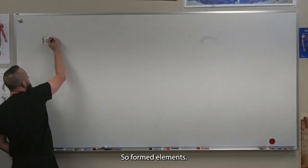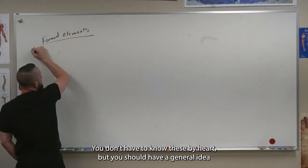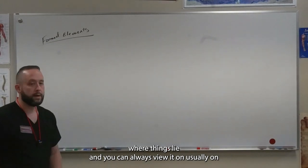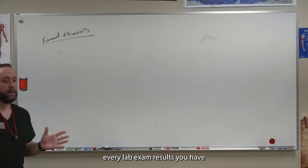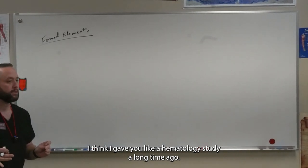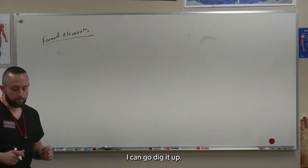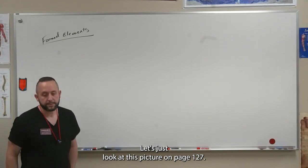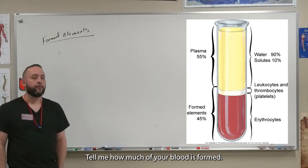So, formed elements. You don't have to know these by heart but you should have a general idea of where things lie, and you can always view it usually on every lab result you have. Do you all have a copy of some lab results? I think I gave you a hematology study a long time ago. If not I can go dig it up. Look at this picture on page 107, 108 for me. Tell me how much of your blood is formed elements.